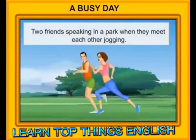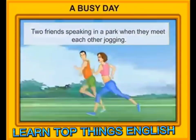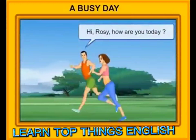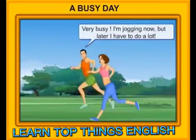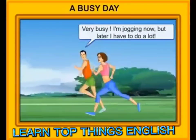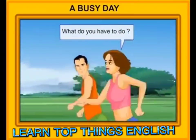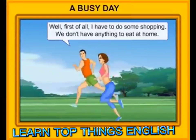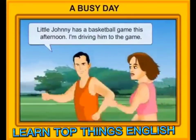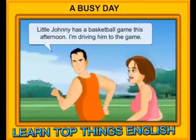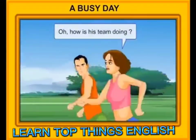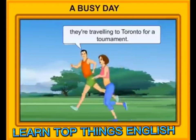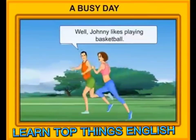A busy day. Two friends speaking in a park when they meet each other jogging. Hi, Rosie. How are you today? I'm great. And you? Very busy. I'm jogging now, but later I have a lot to do. What do you have to do? Well, first of all, I have to do some shopping — we don't have anything to eat at home. And then? Little Johnny has a basketball game this afternoon. I am driving him to the game. Oh, how is his team doing? They're doing very well. Next week they're traveling to Toronto for a tournament. That's impressive. Well, Johnny likes playing basketball.